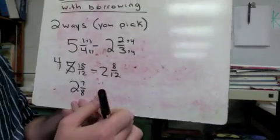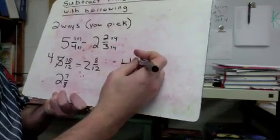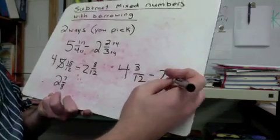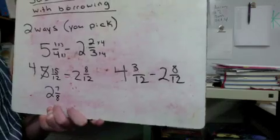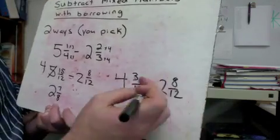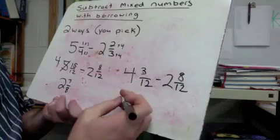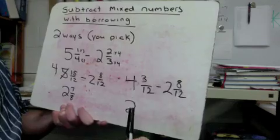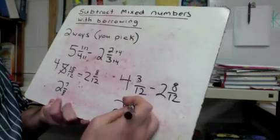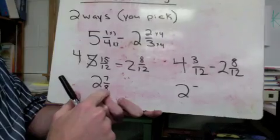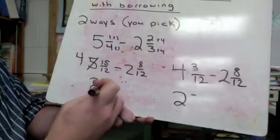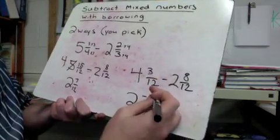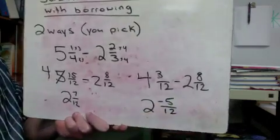Now I'm going to show you a different way. Going back to what we had: four and three-twelfths minus two and eight-twelfths. Here's the other way — I like to do four minus two, which is two. Three minus eight is actually negative five. So we get two and negative five-twelfths.